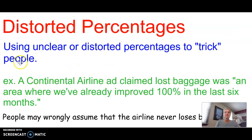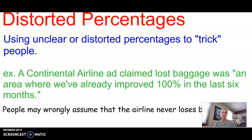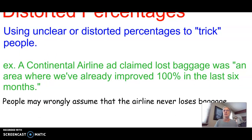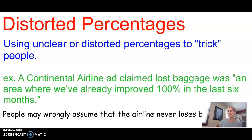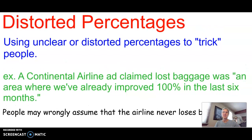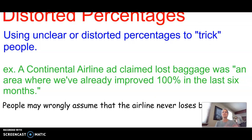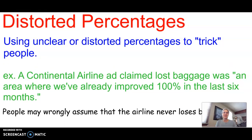Distorted proportions use unclear or distorted percentages to trick people. For example, a Continental Airlines ad claimed lost baggage was an area where they had improved 100% in the last six months. Somebody might read this and assume no more bags have been lost — but that's not what they said. The percentage was distorted: they only improved by 100%, so maybe they were still losing a lot of bags. It could trick you into thinking something different.